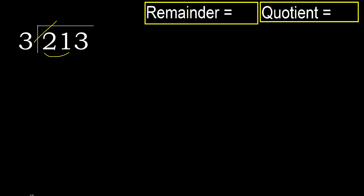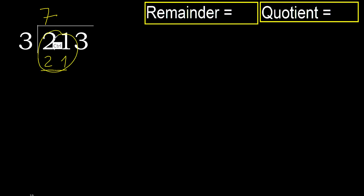21, but not greater. 3 multiplied by 8 is 24 — 24 is greater. 3 multiplied by 7 is 21 — 21 is not greater. Subtract: 0.